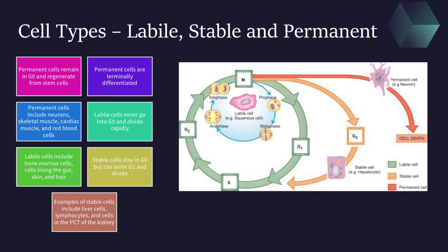Now let's talk about labile cells. These cells never go into G0, and they are rapidly dividing with a short G1 phase. These cells include your bone marrow, the cells lining your gut, skin cells, hair follicles, and germ cells. Interestingly, these cells are the ones most affected by chemotherapy, which is why people undergoing chemo lose their hair and have GI issues. Labile cells are only alive for a short period of time.